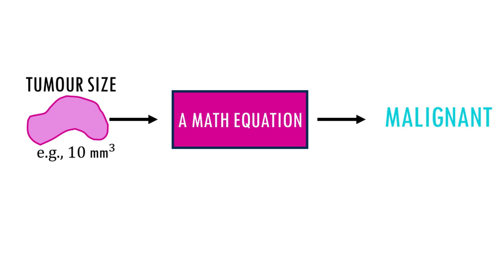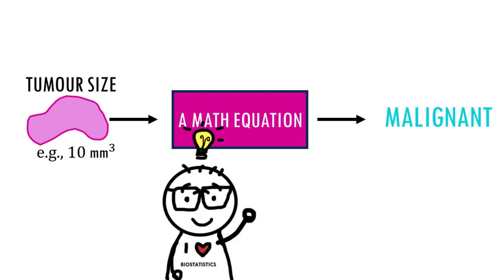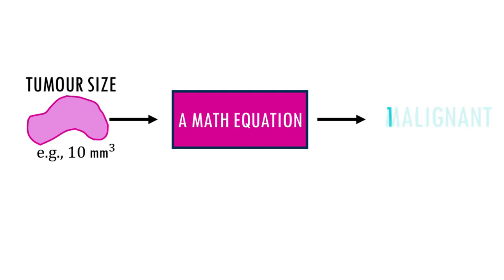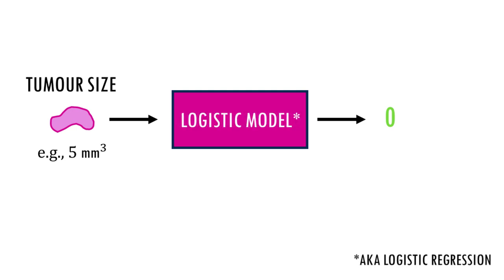Since we're talking about mathematical equations, we need to encode the outcome as a number, since the result will be a numerical value. So let's assign 0 to benign and 1 to malignant. Now the actual equation will be such that given a tumor size we will get a number between 0 benign and 1 malignant. This equation or model we're looking for is the logistic regression model.